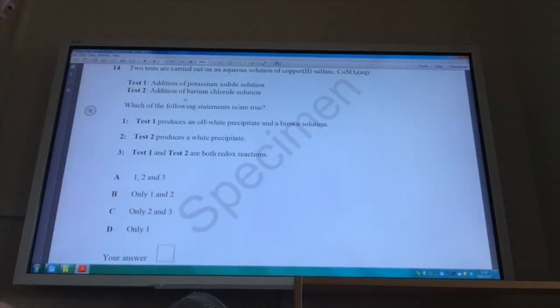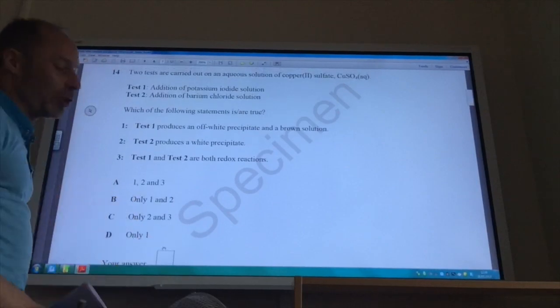Question 14. We've got some copper 2 sulfate solution. Which the following is correct. Well, we add potassium iodide solution. We're going to make iodine and also copper 1 iodide. Therefore, it would produce an off-white precipitate of copper 1 iodide and a brown solution of iodine. So that's correct. Test 2 produced a white precipitate. Test 2 added barium chloride. We would of course make barium sulfate. Which will be correct. Test 1 and 2 are both redox reactions. That's not correct because test 2 is a precipitation reaction. And therefore the answer is B. With both 1 and 2 being correct.